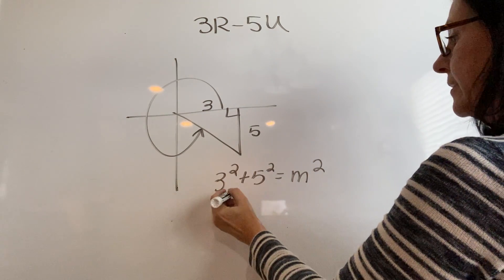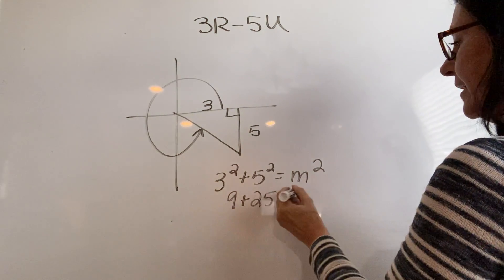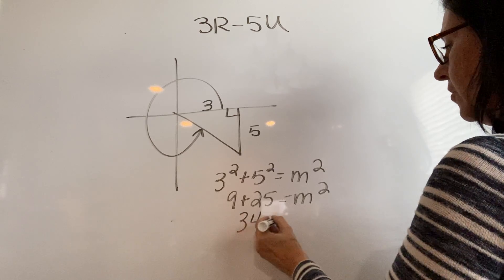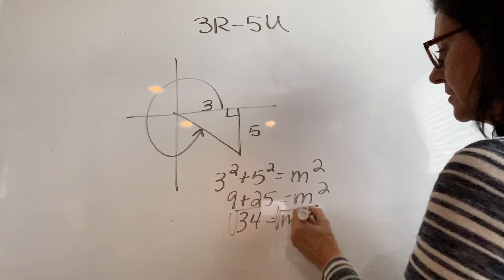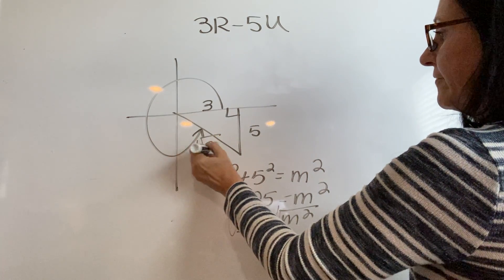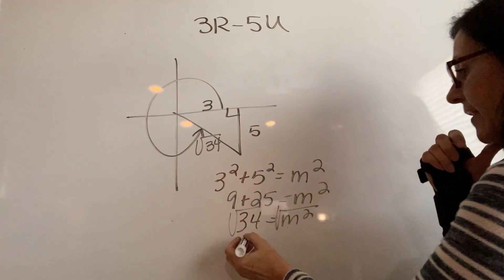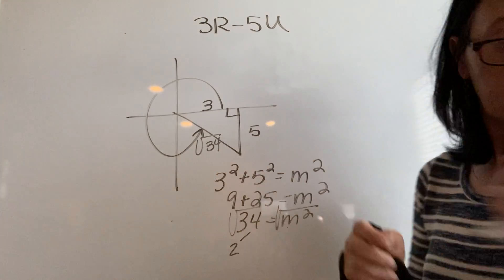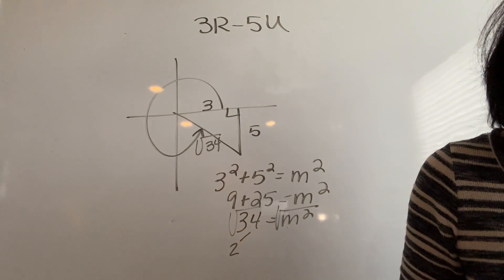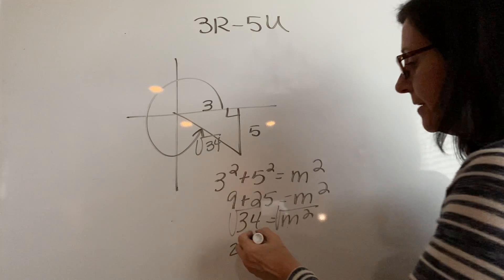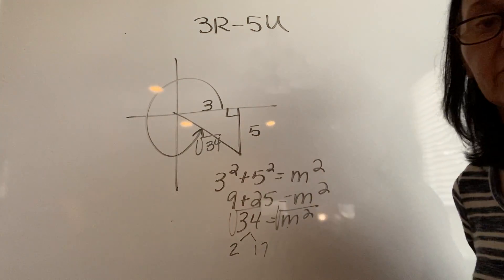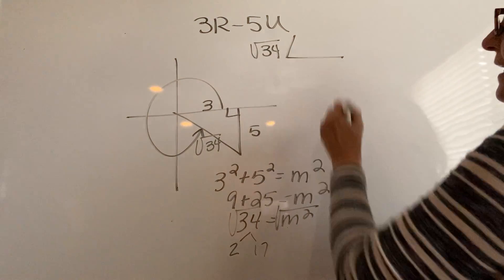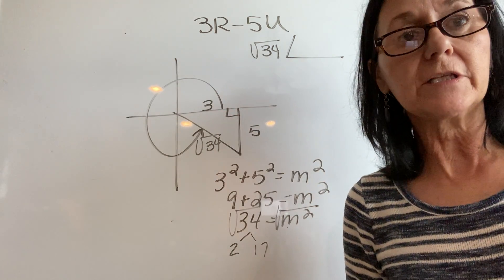That's 9 plus 25 is the magnitude squared, that is 34. Take the square root, so the magnitude is the square root of 34. I don't believe I can simplify that. 34 divided by 2, nope, it's 17, 2 times 17, can't simplify, leave it square root of 34. So that is my magnitude, square root of 34. I need the angle. Always when I'm going from rectangular to polar, I'm using the tangent.